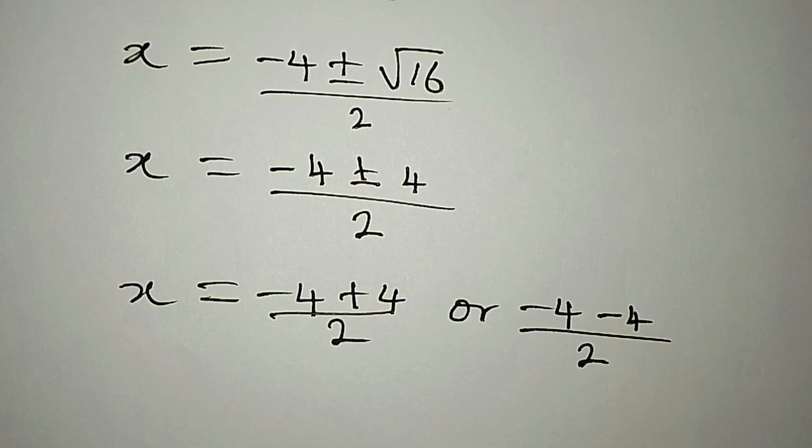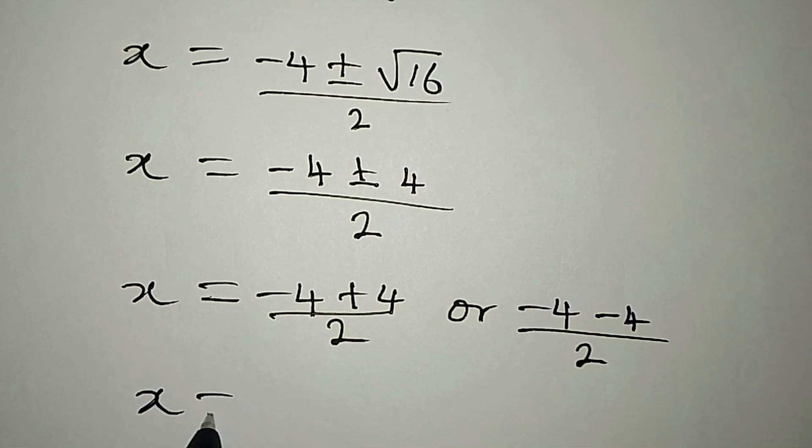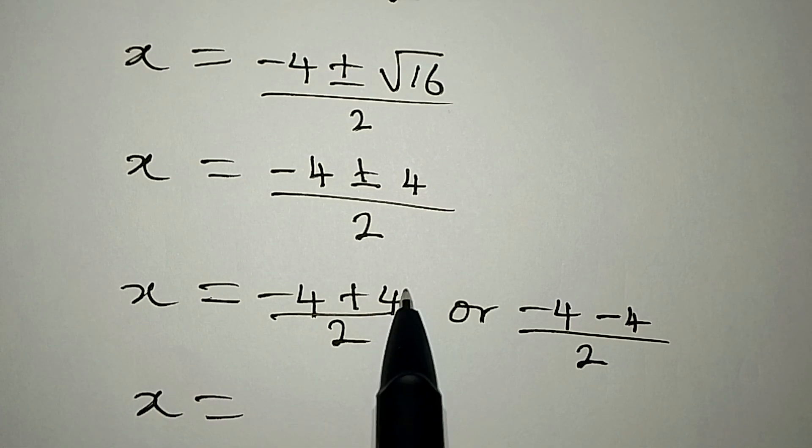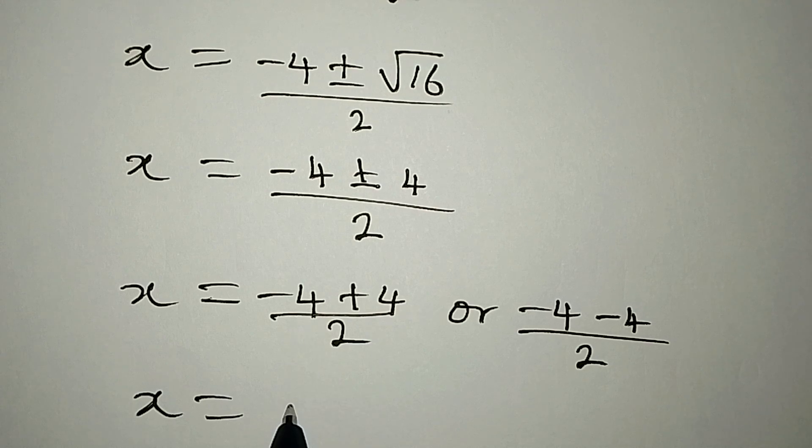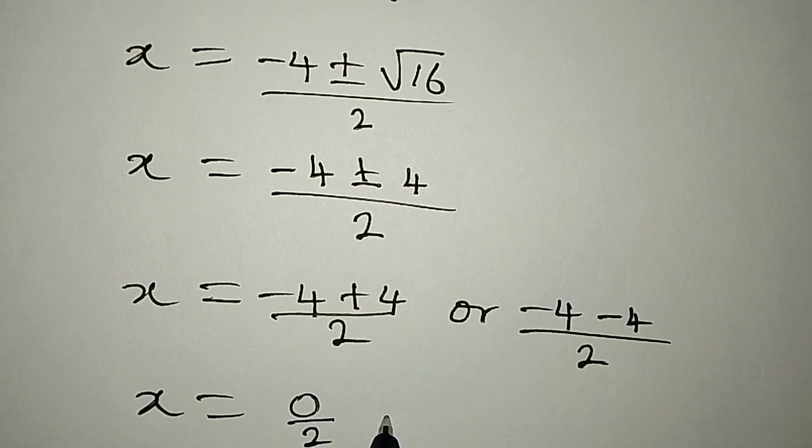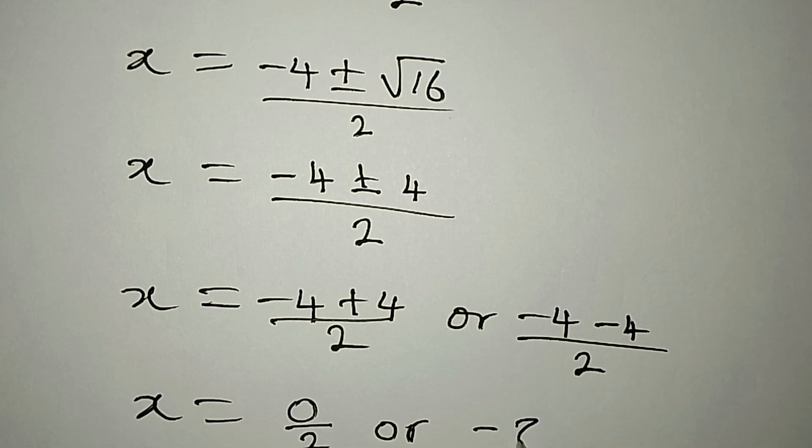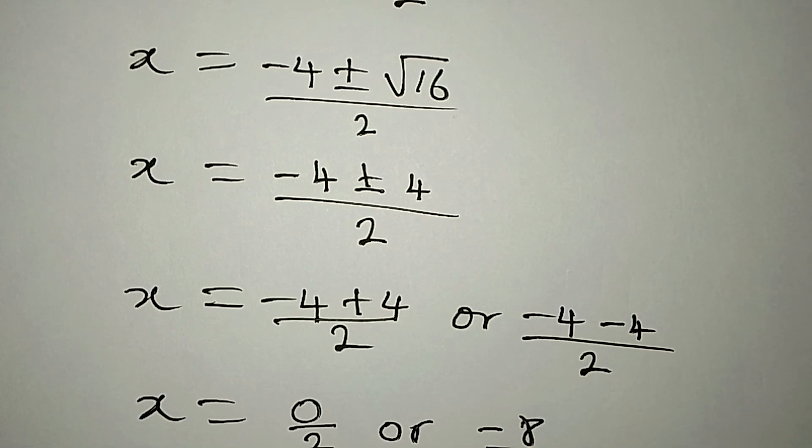Now x is equal to minus 4 plus 4, which is the same thing as 4 minus 4, and that will give 0 over 2. Or minus 4 minus 4 is minus 8, and then we have this over 2.